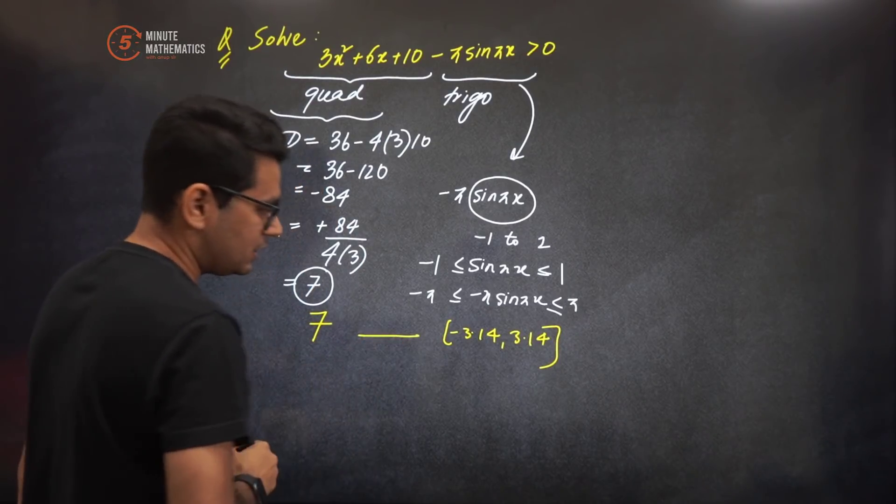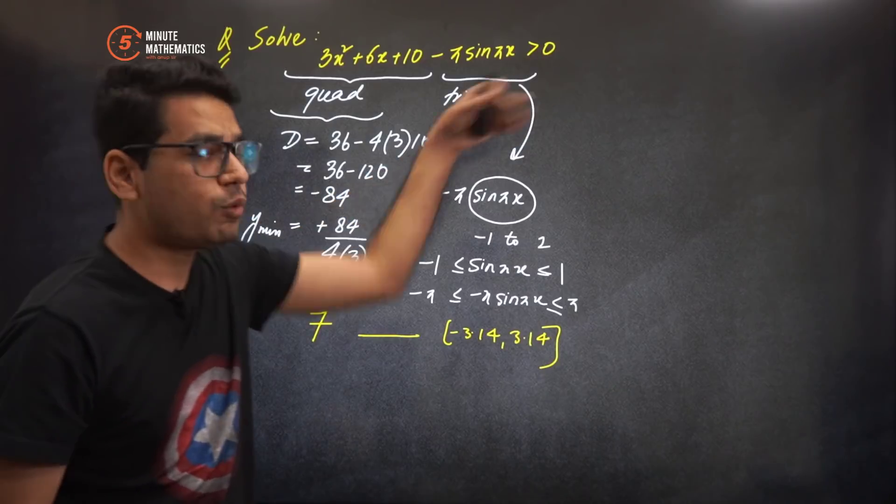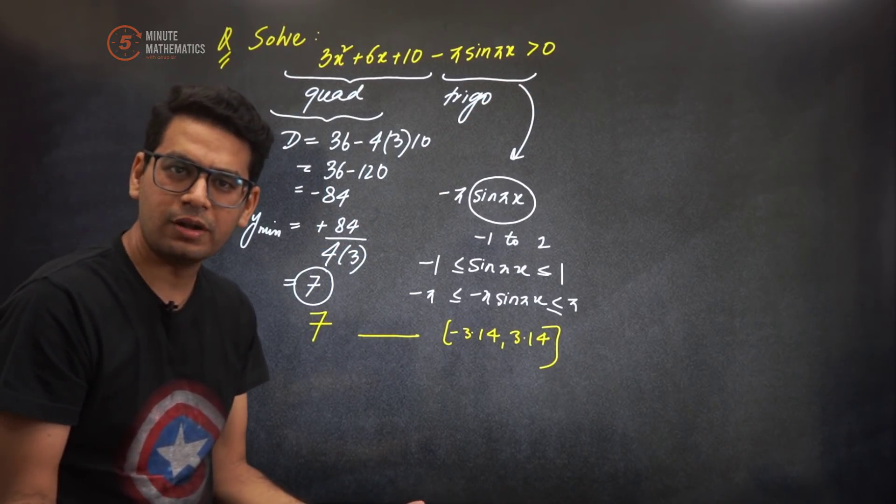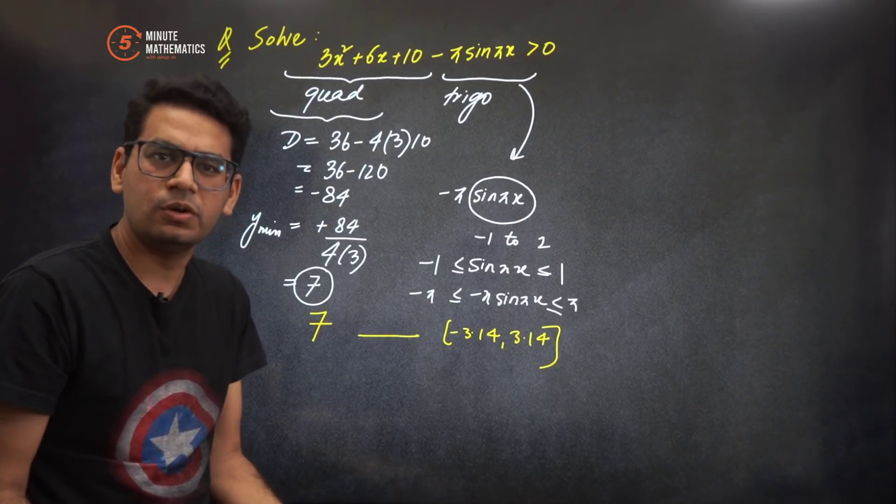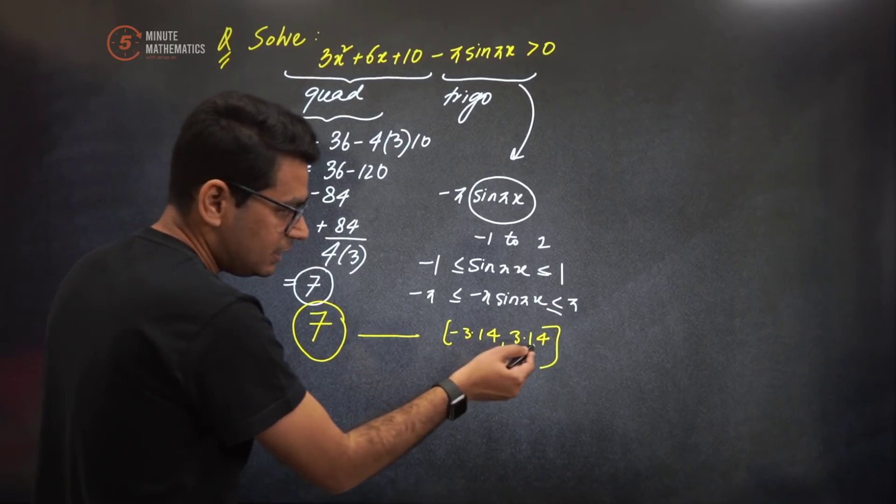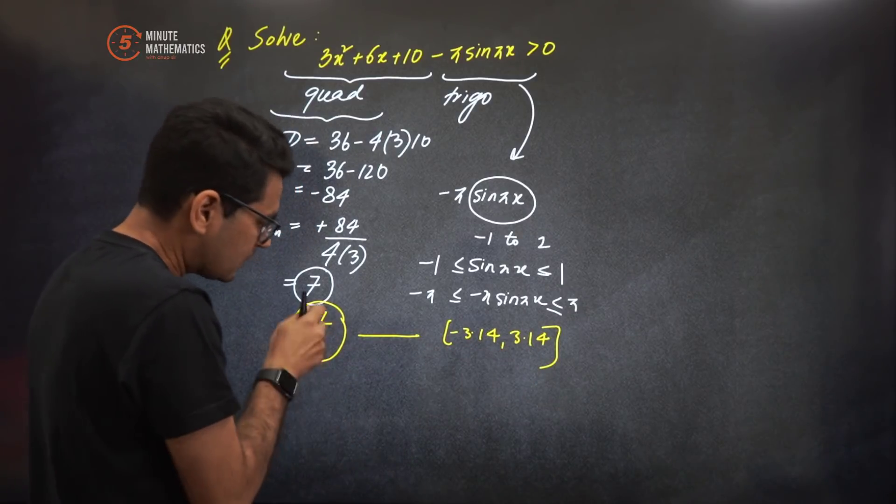So you have 7 minus something this, and you are asking for what values of x it is going to be positive. Isn't it a shocker? It's not no longer a shocker, why? Because see, 7 is always greater than the maximum subtraction that you can do. If you subtract the maximum value which is 3.14, then also the answer is going to be positive.